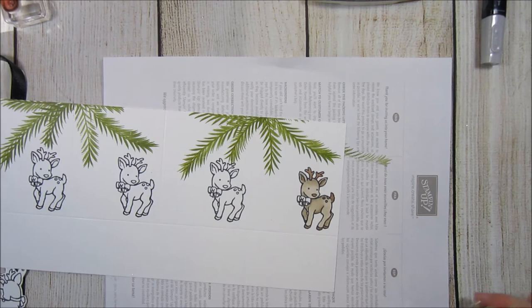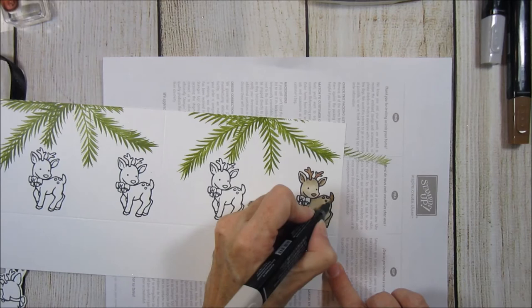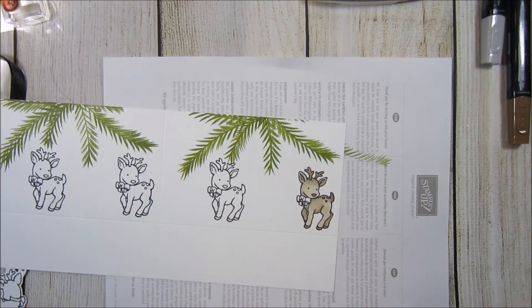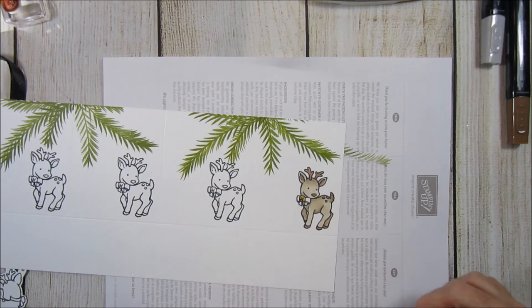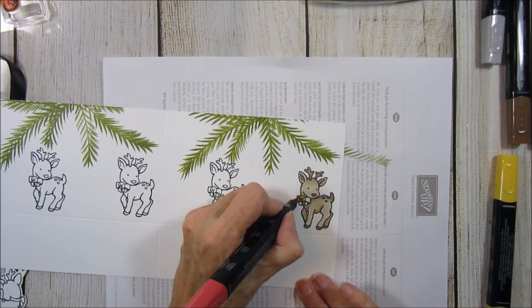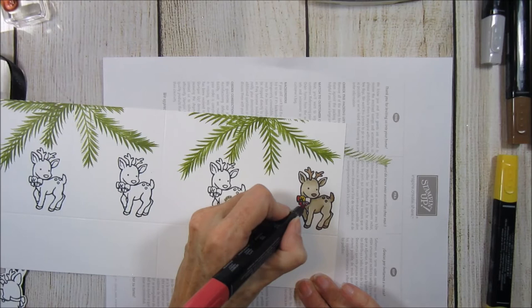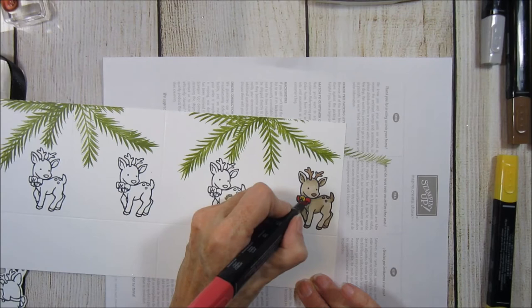Now on his tail I'm going to come back with the lighter one and kind of blend the edge of that too, so that it's not quite so stark of a change. And then finally I'm going to come in with the daffodil, dark daffodil, and color in my bell. And with the light cherry cobbler, I'm going to go ahead and put in the bow. And there he is.